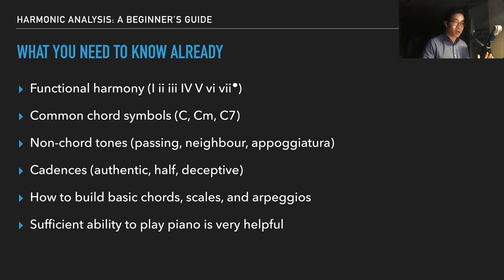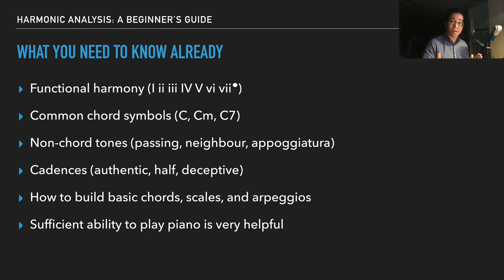In minor, it's kind of the opposite: the I and IV are minor, the V is major depending on whether it's natural or harmonic minor, the III, VI, and VII are major chords, and the II is the diminished one. You should also be aware of common chord symbols — what we call root quality chord symbols.